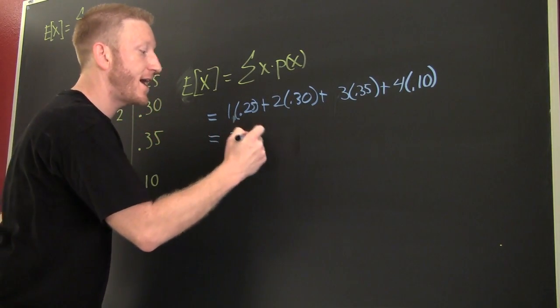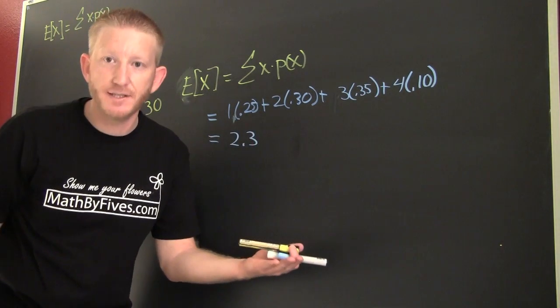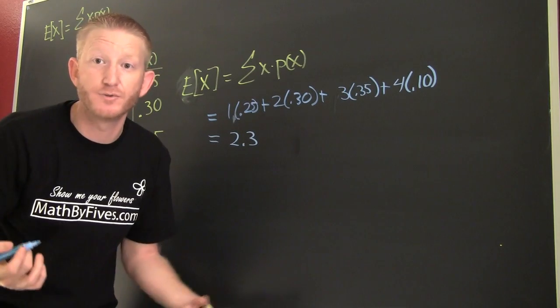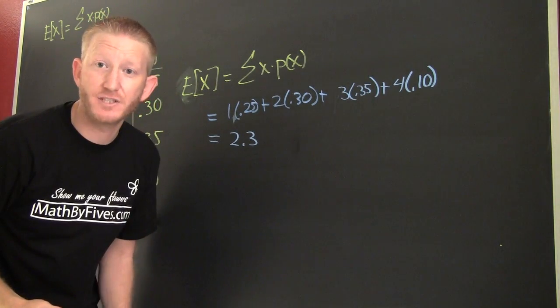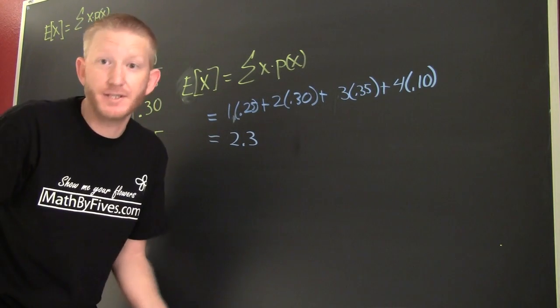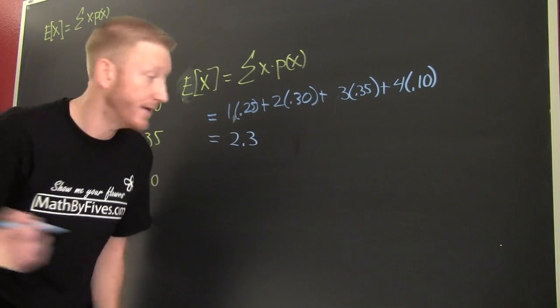The answer is 2.3. So what can we expect in this probability distribution? Whatever it was representing, we should expect our average to be 2.3.